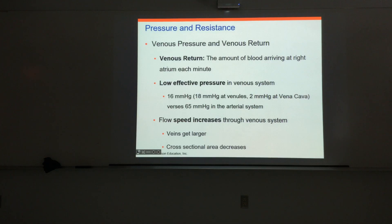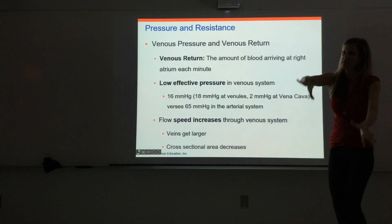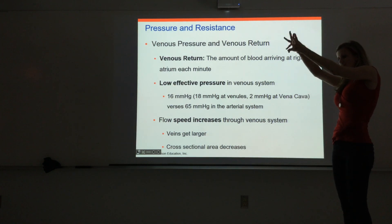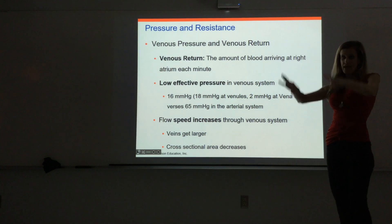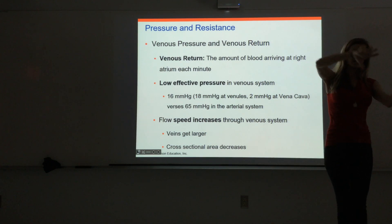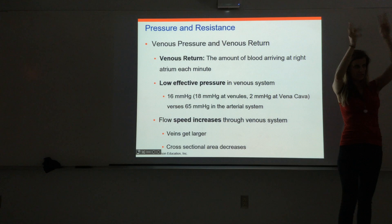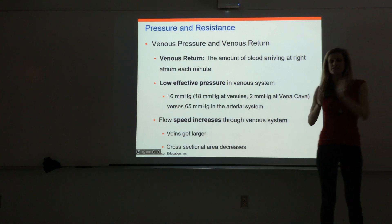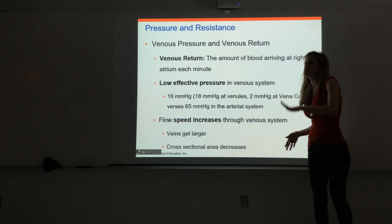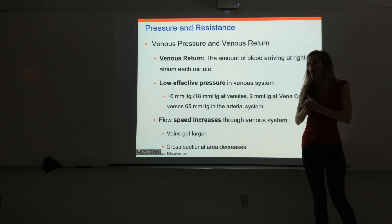So we talked through a bit introducing the blood vessels. We went through arteries — elastic arteries, muscular arteries, arterioles. Then we get to capillaries, and after capillaries we get to veins: venules, medium veins, and large veins. We talked about a couple different types of capillaries: continuous capillaries, fenestrated capillaries, and sinusoids.